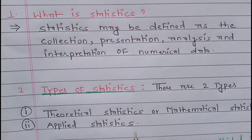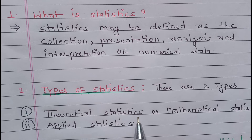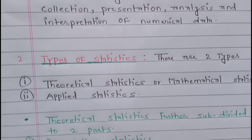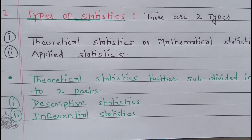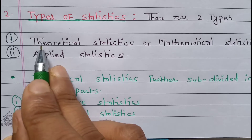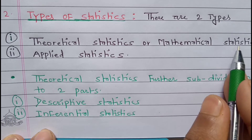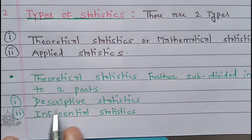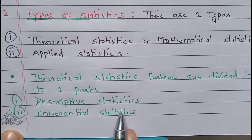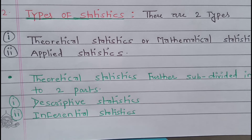Theoretical statistics, or mathematical statistics, is further subdivided into two parts: descriptive statistics and inferential statistics.